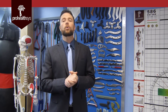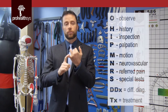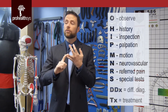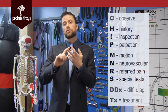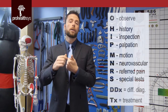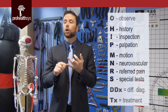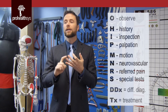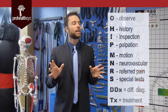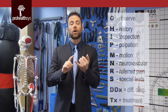The first part of the O-HIPNERS Principle is observation. Then we progress through to history, inspection, palpation, motion assessment, neurovascular screen, referred pain, and special tests. Let's break that down in context — what are some of the key things we have to get?